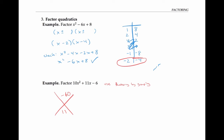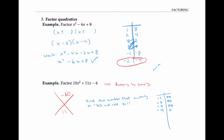Now I'm going to look for two numbers that multiply to give me negative 60 and add to give me 11. You might just be able to come up with them in your head, but if not, you can write out all pairs of factors that multiply to negative 60: negative one and 60, negative two and 30, negative three and 20, and keep going until you find a pair that adds to 11. Looking at it, negative four and 15 gives me 11. So I don't have to continue with my chart of factors.